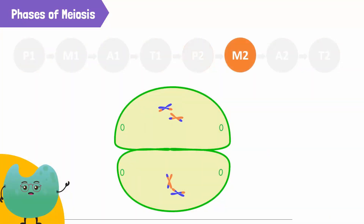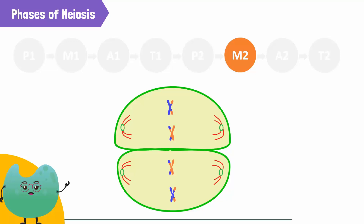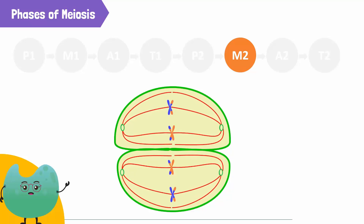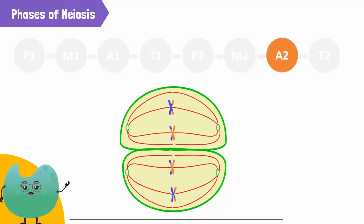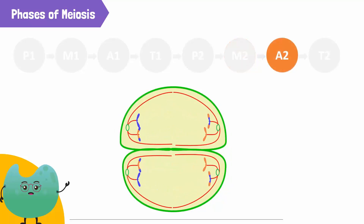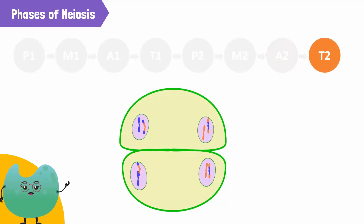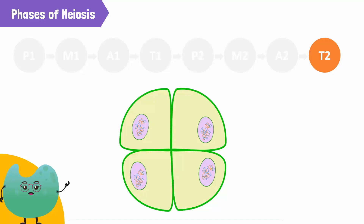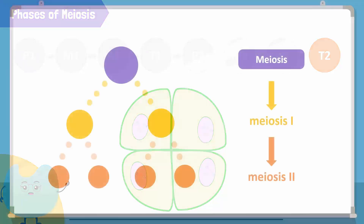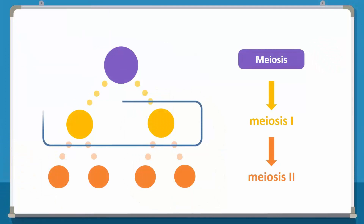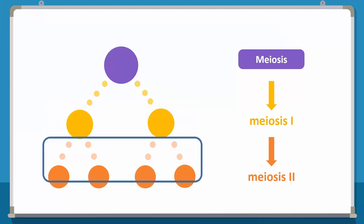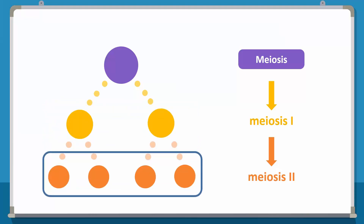In metaphase II, the chromosomes line up again at the center of the cell. The centrioles move to the poles of the cell. The spindle fibers attach to each sister chromatid. In anaphase II, the sister chromatids are pulled apart as the spindle fibers shorten, and the ends of the cells are pulled further apart. In telophase II, the nuclear membrane reforms. Cytokinesis occurs and the cells have officially divided. Since meiosis II began with two cells and each of those cells further split into two, we now have four unique granddaughter cells at the end of meiosis.